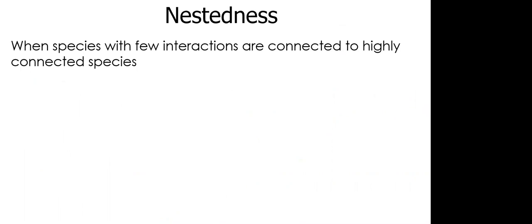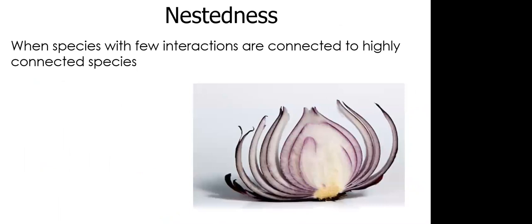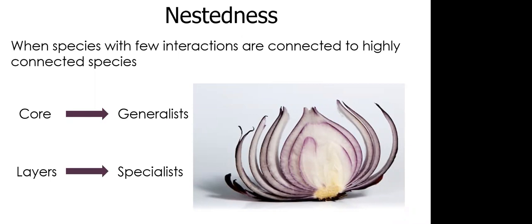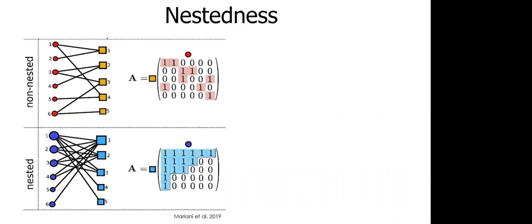One common metric of network analysis is nestedness. When species with few interactions are connected to highly connected species, the network is said to be nested. We can think of this as being analogous to an onion, where the core of the network is made up of the generalists and the peeled layers are made up of specialists. If the specialists from the community are removed, the core of the generalists remain unaffected. Therefore, what we can infer about the network with nestedness is how resilient a community can be to secondary extinctions.